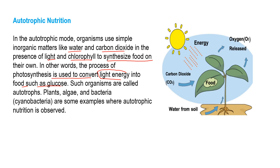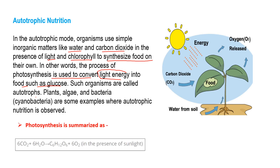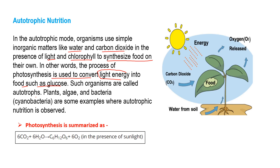In this category, we count some plants, algae, and bacteria. Most of the plants come in this category, but there are some exceptions too. If we summarize the whole process of photosynthesis: 6CO₂ + 6H₂O gives glucose (C₆H₁₂O₆) and 6 molecules of oxygen, in the presence of sunlight.